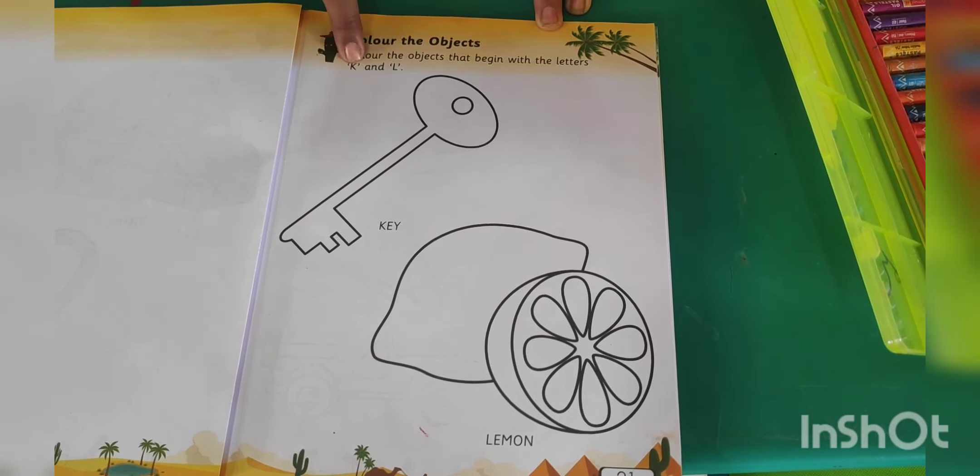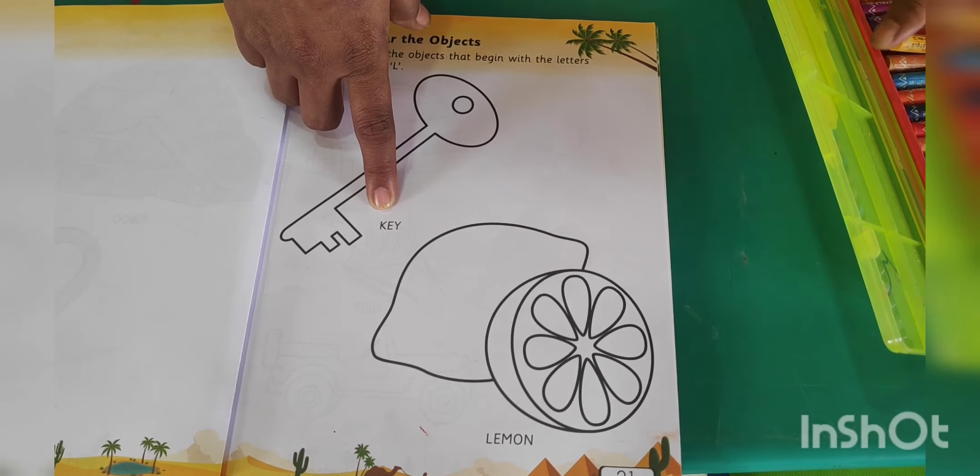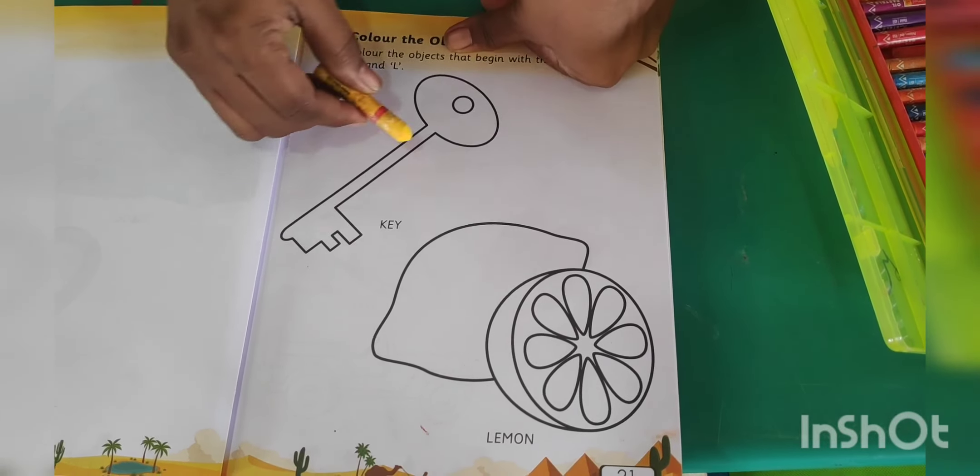Color the objects that begin with the letters K and L. Today I have taught you letter K, and here you have to color the object. Which object is this? Yes, this is key. K-E-Y, key. K says kuh and K for key. Okay. Now I am going to color this. I am taking yellow color.